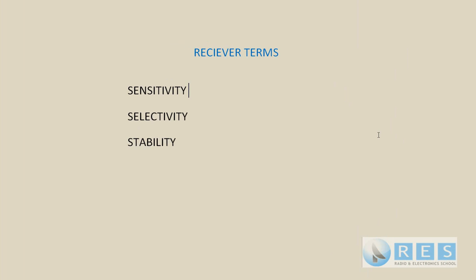The first one I want to talk to you about is sensitivity. The sensitivity of a receiver is a measure of its ability to receive weak signals. It's measured in microvolts — you will not be assessed on that. So a receiver with a greater sensitivity is going to be able to hear signals where a receiver with a lack of sensitivity would not be able to hear those signals.